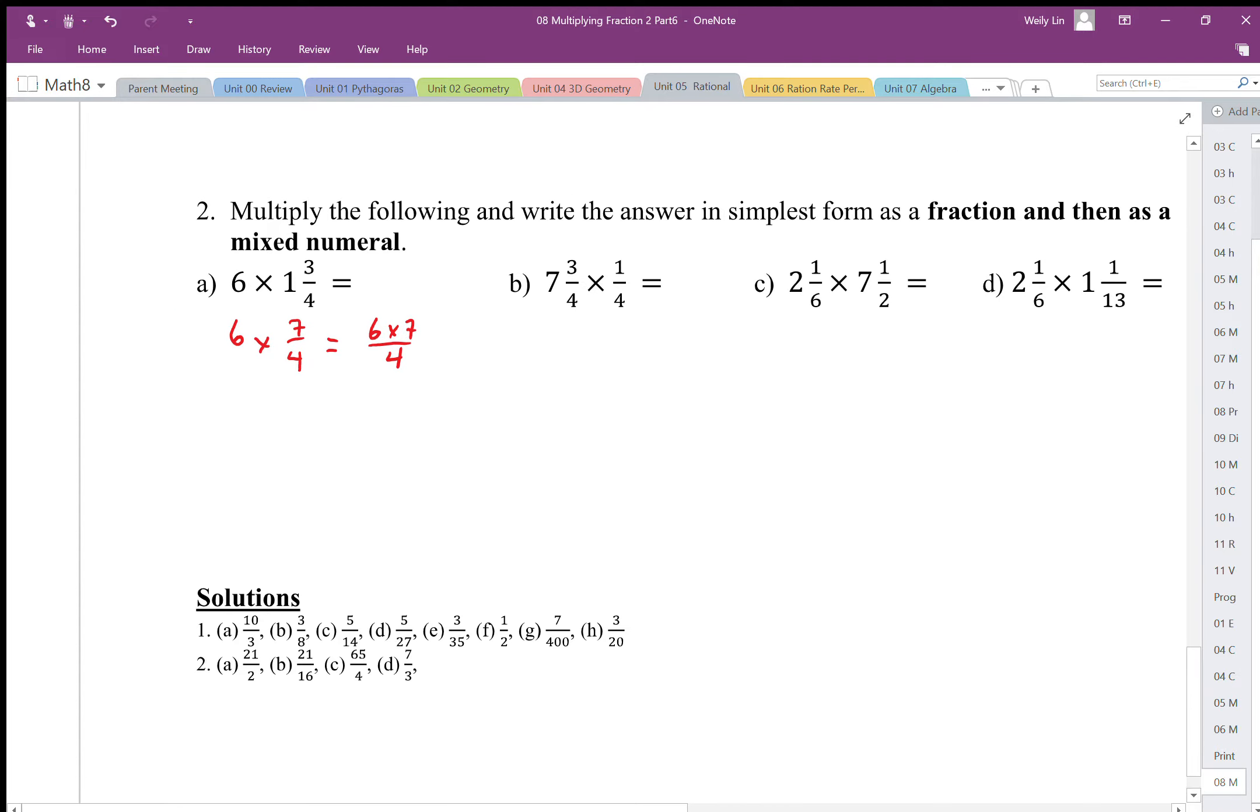Remember that as a general rule. This is a good model to use and the multiplication just stays on the top only. If it's division it stays on the bottom, so we end up with 42 over 4.